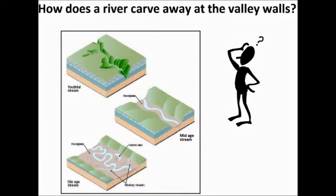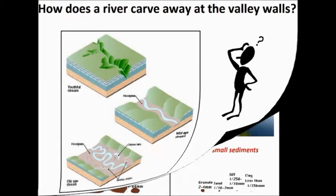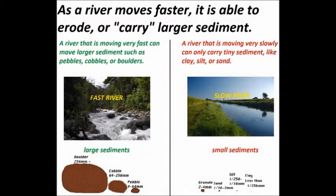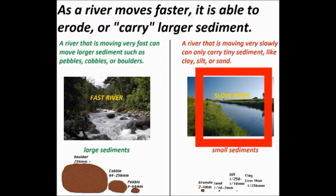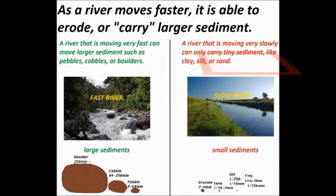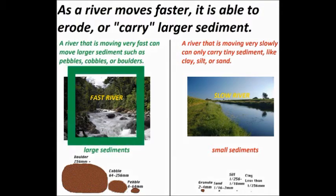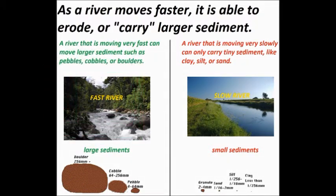You may be wondering, how does a river carve away at the valley walls? As a river moves faster, it is able to erode or carry larger sediment. A river that is moving very slowly can only carry tiny sediment, like clay, silt, or sand. A river that is moving very fast can move larger sediment, such as pebbles, cobbles, or boulders.